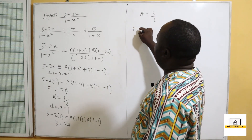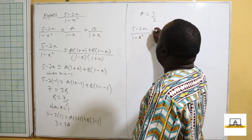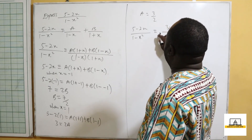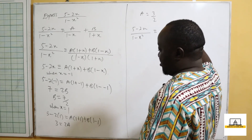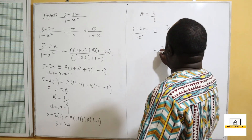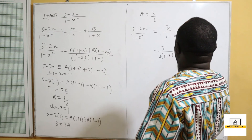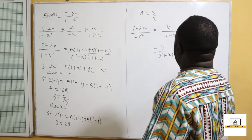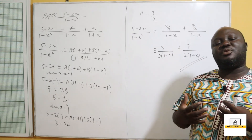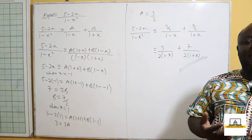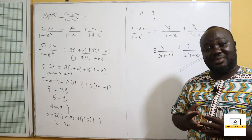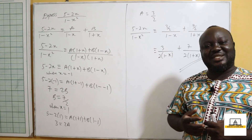Expressing the partial fraction: (5−2x) over (1−x²) equals (3/2) over (1−x) plus (7/2) over (1+x), which is written as 3 over 2(1−x) plus 7 over 2(1+x). This is our partial fraction. I urge you to go for more examples, try solving on your own to build confidence. The fear of mathematics is the beginning of wisdom. Thank you very much — until next time, bye!